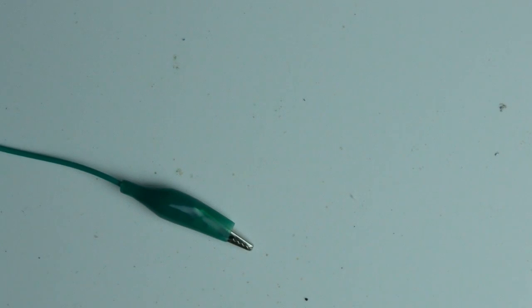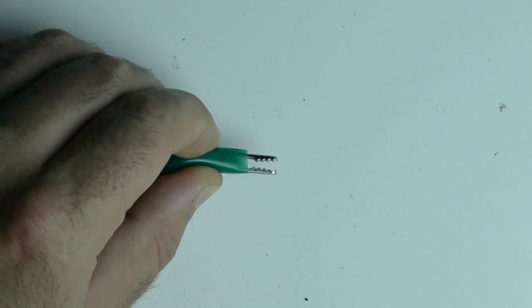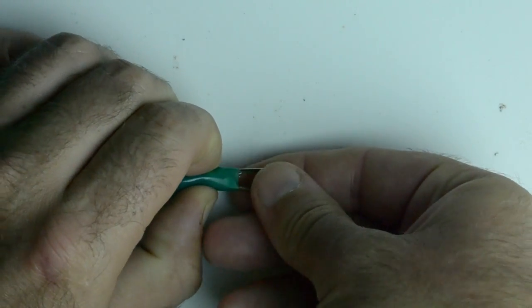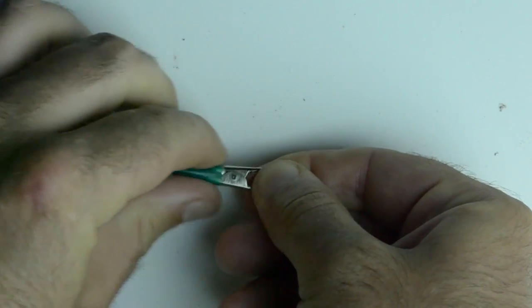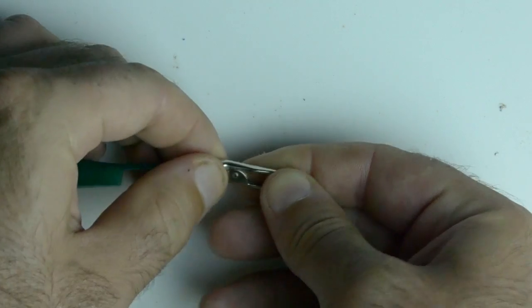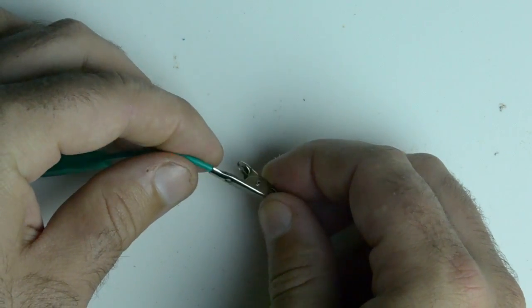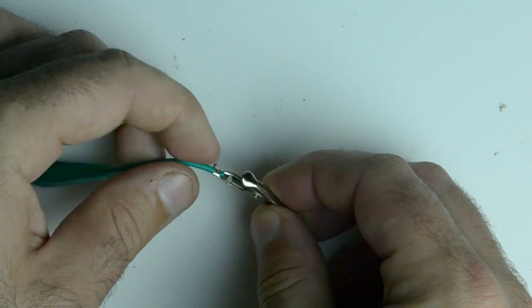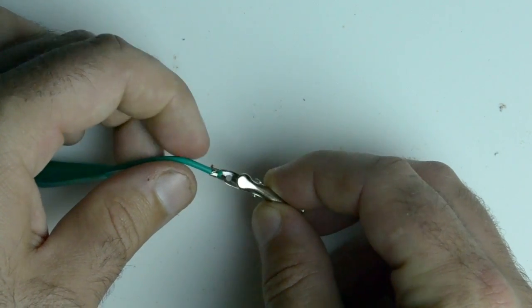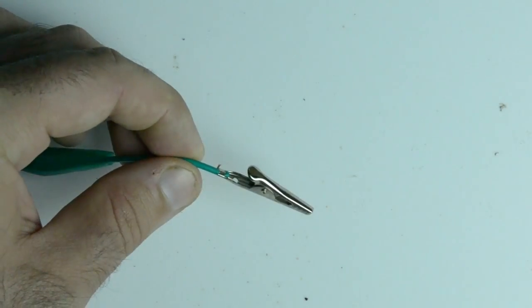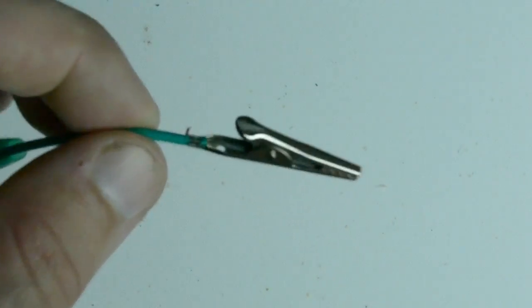So the way I get these apart is I spread them and then I let them clamp down on my fingers and then you can pull back the insulation. And the problem with these is that this wire is not soldered on. You can see there's just a little bit sticking out. It's actually just crimped together and I'm going to see if I can show you a little closer.